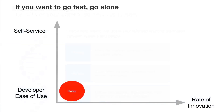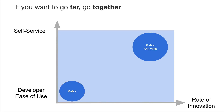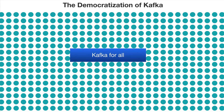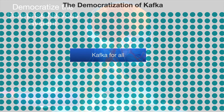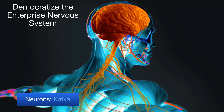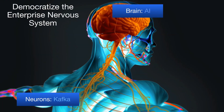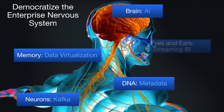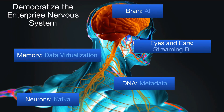The race to become digital is just beginning. Kafka developers, there's an old saying: if you want to go fast, go alone; if you want to go far, go together. In the Kafka world, if you want to keep hand-coding everything, that's fine. But to innovate, to elevate — democratize Kafka. Go with your business partners. Make Kafka the sensory input that makes it easy to augment intelligence with AI, access enterprise DNA with metadata, memory with data virtualization, and use Streaming BI — the eyes and ears of the modern enterprise nervous system that represents the future of connected, intelligent digital applications.